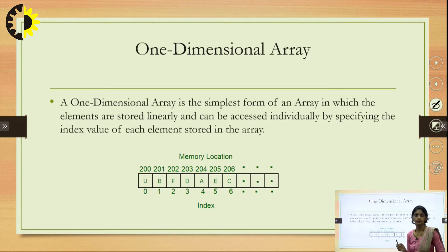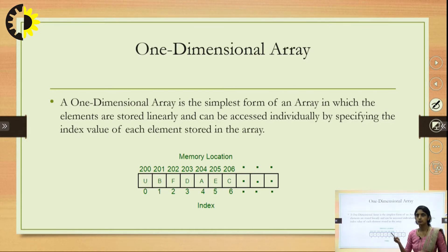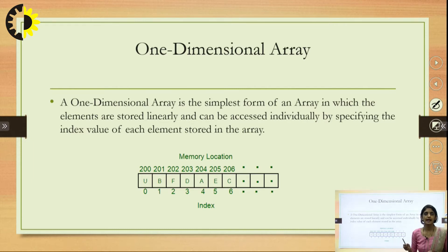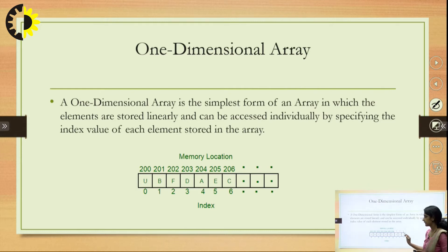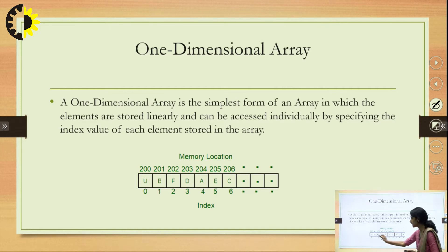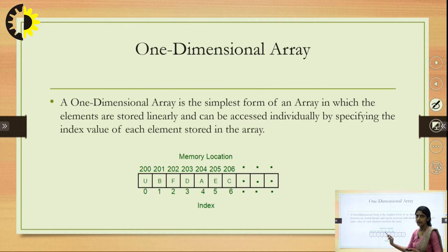A 1-dimensional array is the simplest form of an array. Elements are stored linearly. Taking the same example, this is a 1-dimensional array where all elements are stored linearly. The array index starts from 0.